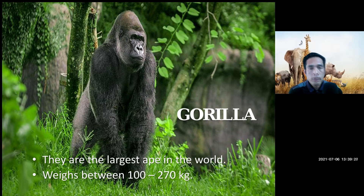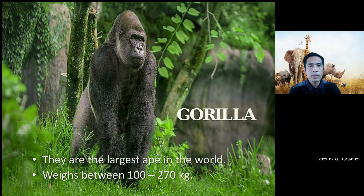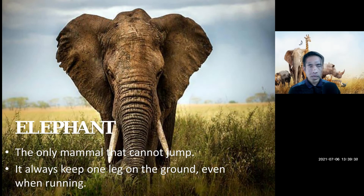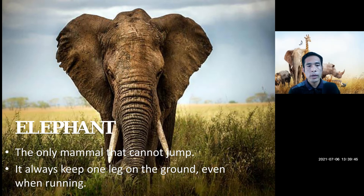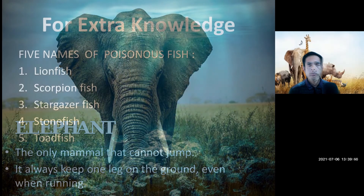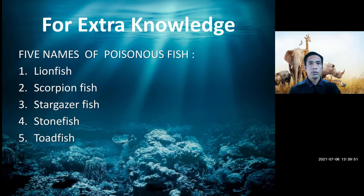Gorilla — gorillas are the largest apes in the world. They weigh between 100 to 270 kg. Elephant — the elephant is the only mammal that cannot jump. It always keeps one leg on the ground, even when running.